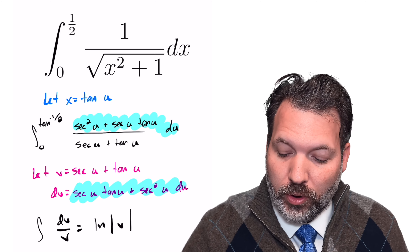What we're left with is the natural log of the secant of the inverse tangent of one half, plus one half itself. To evaluate secant of the inverse tangent of one half, we pick an angle theta such that tangent of theta equals one half. Tangent is opposite over adjacent, so we form a right triangle with legs 1 and 2, and by the Pythagorean theorem the hypotenuse is the square root of 1 squared plus 2 squared, which is root 5.